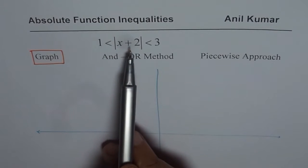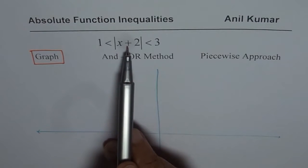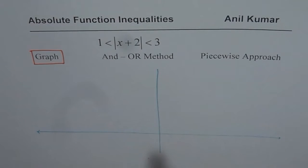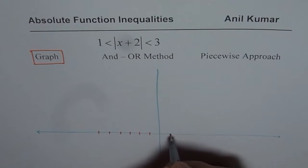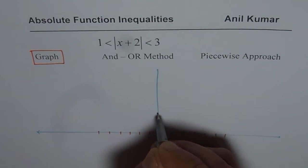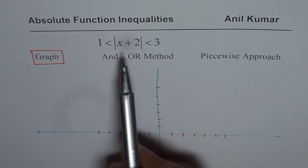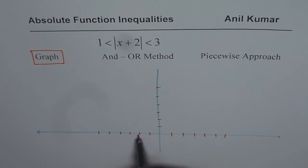When we have the absolute value of x plus 2, it means that the absolute function x has moved 2 units left. So when we say the absolute function has moved 2 units left, that means the vertex of the function is at minus 2.